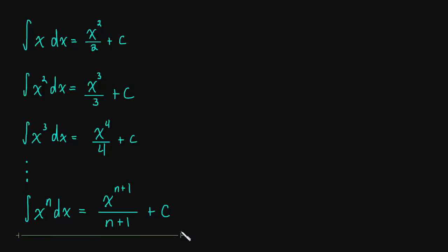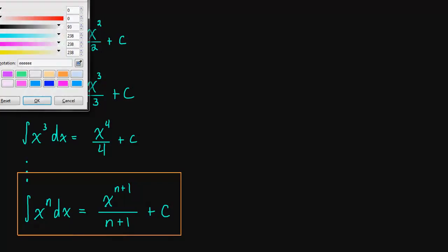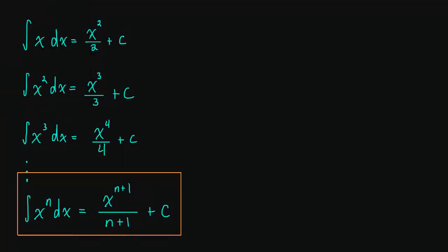So anytime you have x to a power, this is how you find its antiderivative. You might be asking, where does this come from? Why does this make sense? Can I see some examples? Let's handle those, but let's do them one at a time.